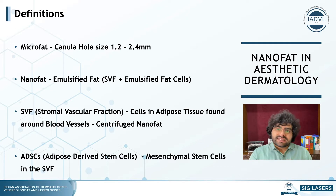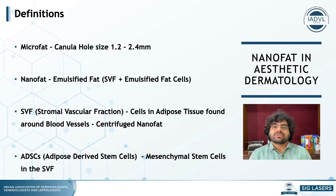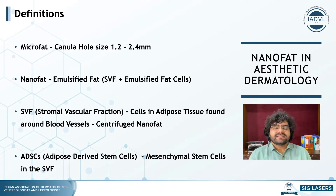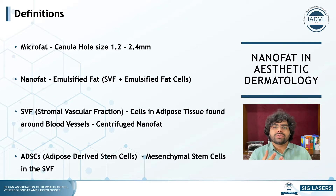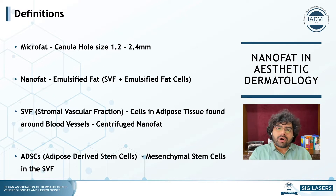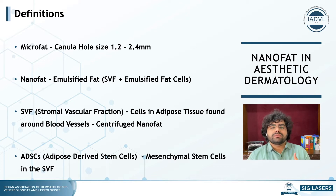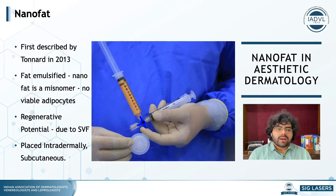The stromal vascular fraction contains various cells present in the adipocytes. These cells also contain a group of cells known as adipose derived stem cells — ADSCs — which are also quite well known. These terms are what we will see repeatedly in this webinar.